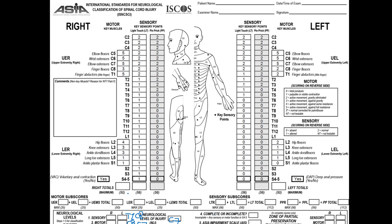Is the injury complete or incomplete? We have voluntary anal contraction and deep anal pressure, so it's definitely incomplete. Since we have voluntary anal contraction, this would classify as AIS C or D. To decide, we check the innervation below the neurological level. The neurological level is C7, so let's draw a line here at C7.